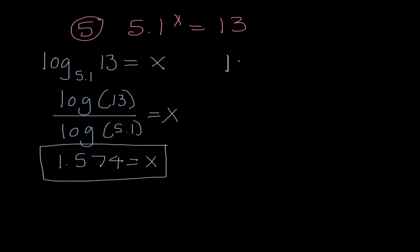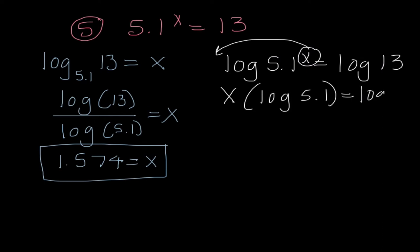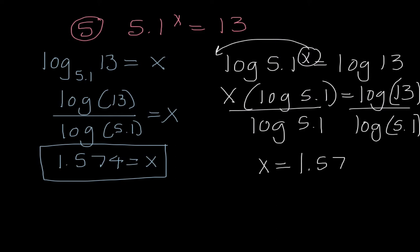Method number 2, let's just say I decided to take a log of both sides. I can move my X out in front, so I have X times the log of 5.1 equals the log of 13. When I divide both sides by the log of 5.1, and I put this into my calculator, I end up getting that X is 1.574.